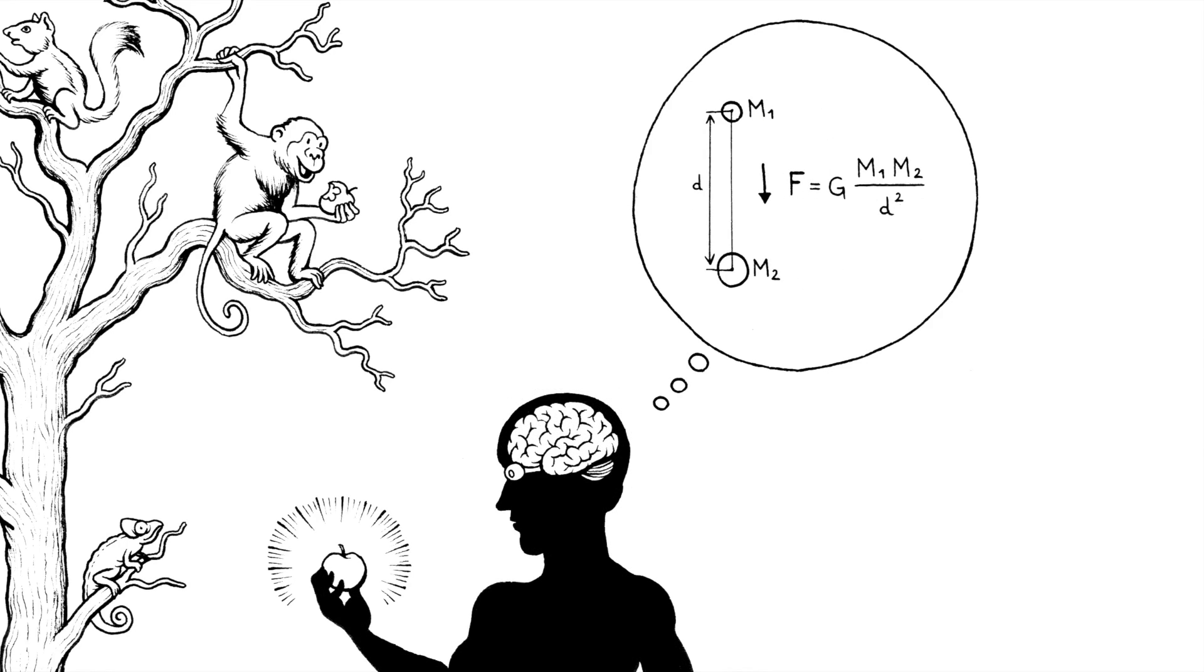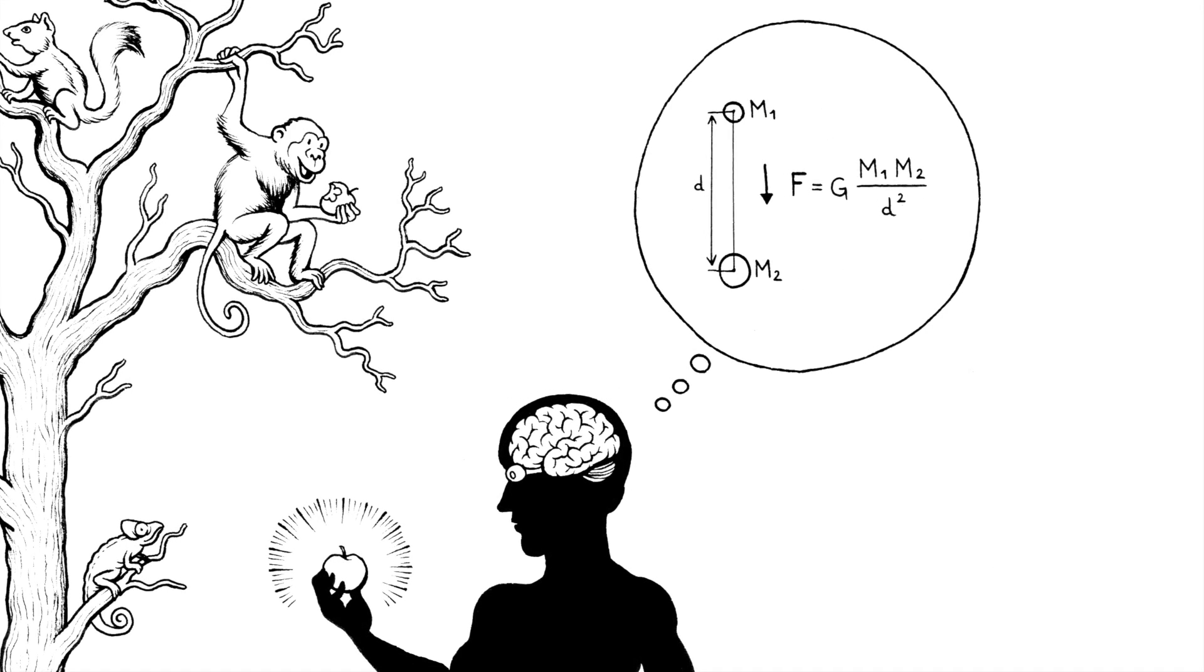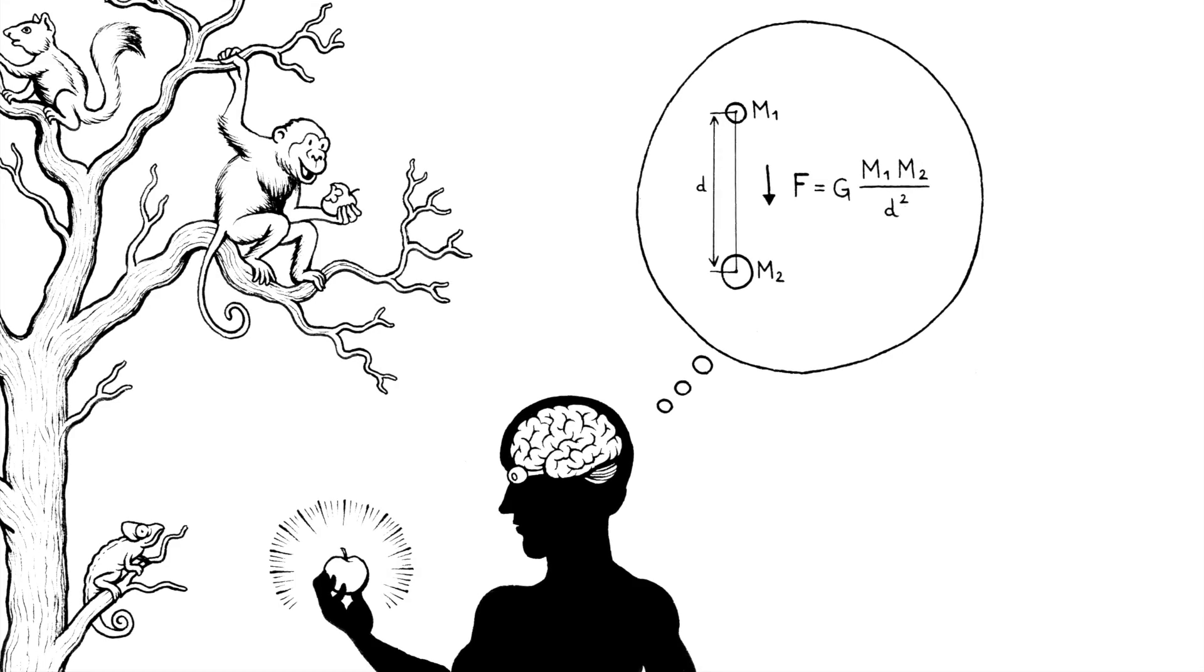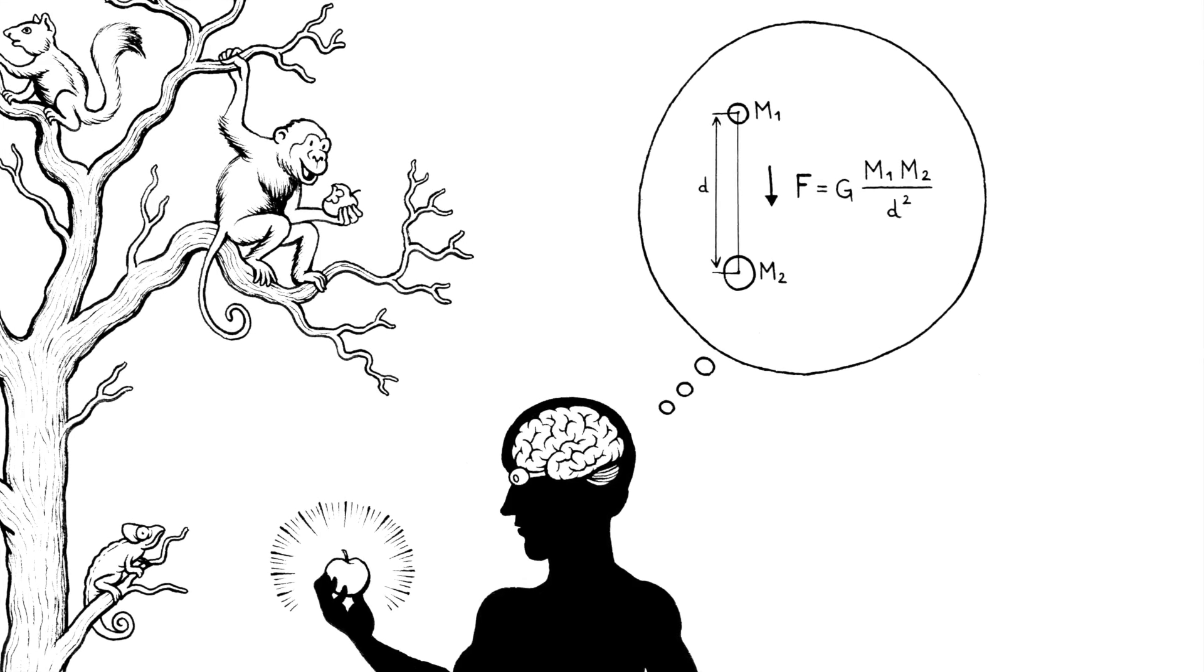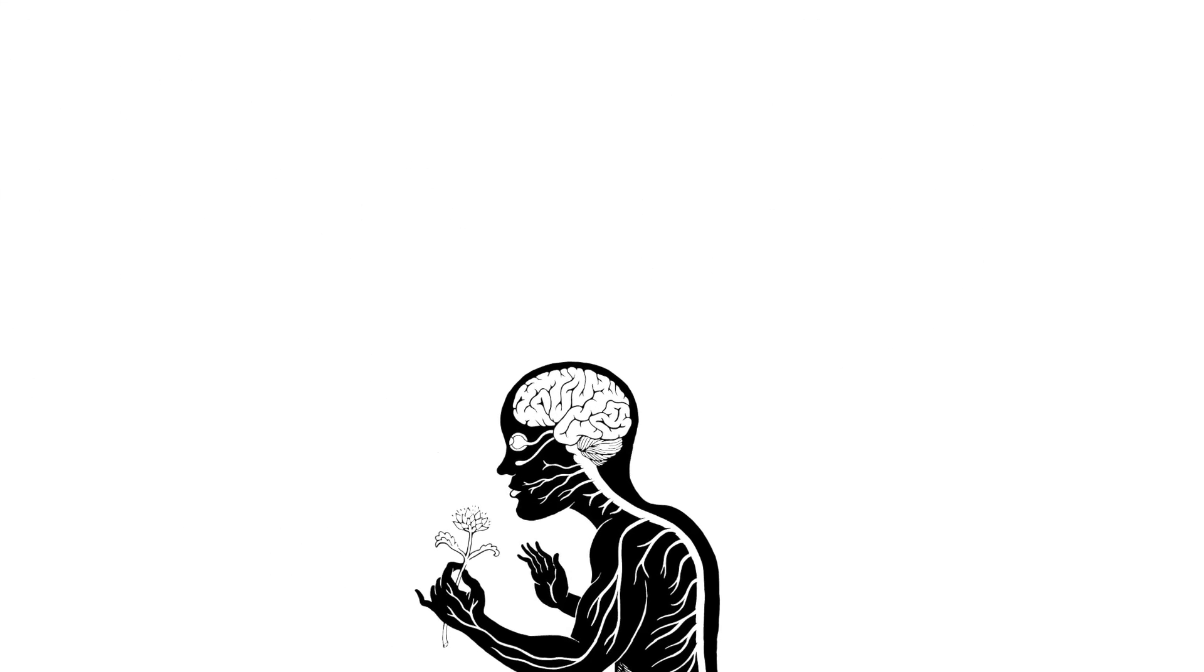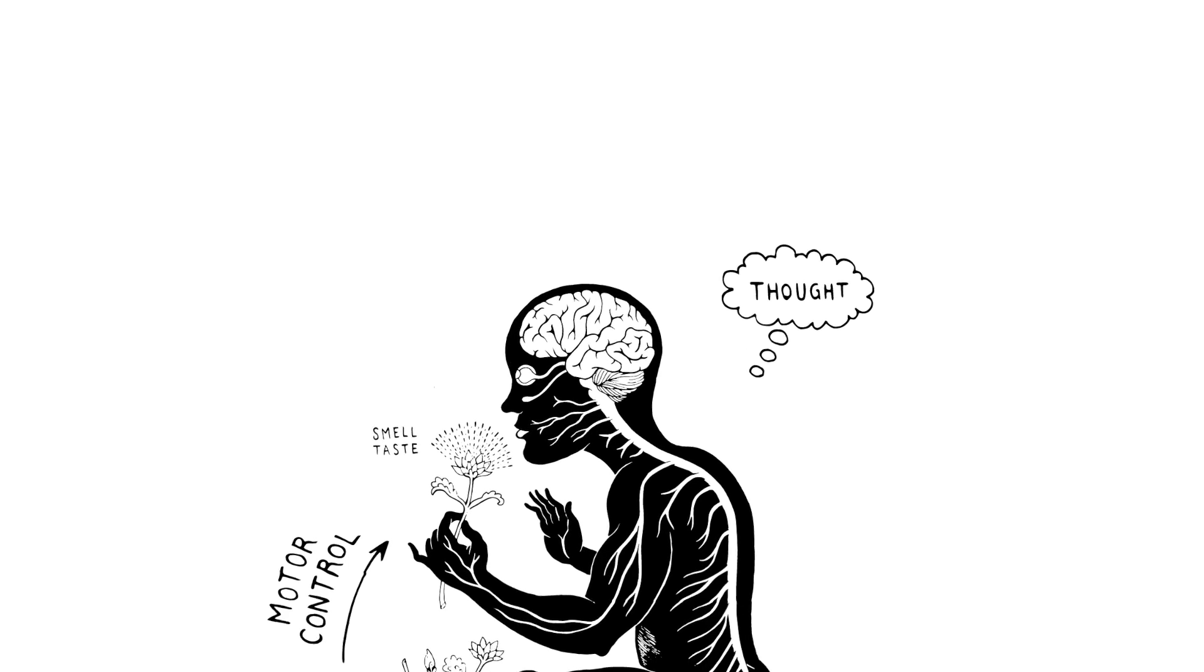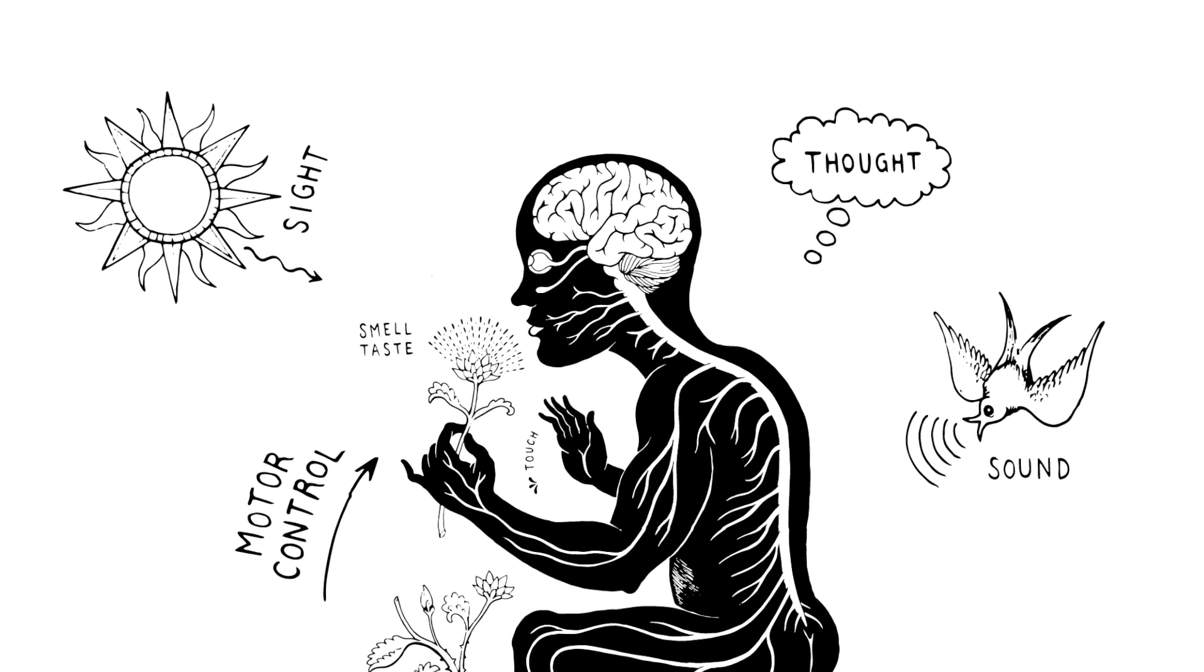Our brains are the key to our evolutionary success. Weighing in at only 3 pounds fully grown, our brain stores our every memory, generates our every thought and feeling, and allows us to touch, see, and interact with the world.